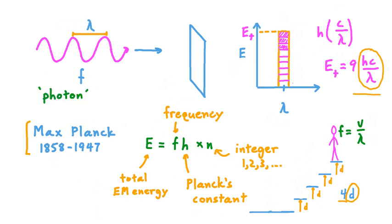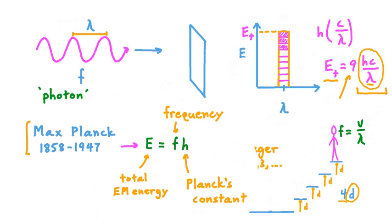The name for this smallest possible chunk of electromagnetic radiation is photon, and this term helps us to better understand these results. Understanding that light can exist in individual packets called photons, we would say that an individual photon of light with wavelength lambda has energy H times C divided by lambda, and that the total energy E sub T that we've measured with our plate is equal to the energy of 9 such photons.